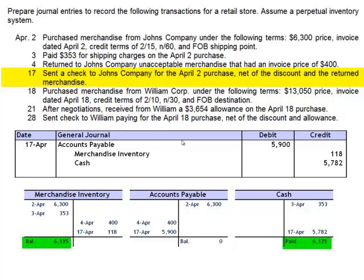We've paid a total of $6,135 in cash. The T-accounts are helpful here because the balance in merchandise inventory — $6,135 — actually represents the amount paid for the inventory. When all is said and done, we wrote two checks: one to the freight company for $353 and one to John's Company for $5,782. The amount paid for the inventory is $6,135, and that's the balance in the inventory account.